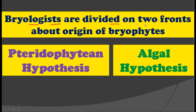Bryologists are divided into two camps about the origin of bryophytes. The first view is that bryophytes originated from the pteridophytes, known as the pteridophytean hypothesis. Another group says bryophytes originated from algal plants, known as the algal hypothesis.